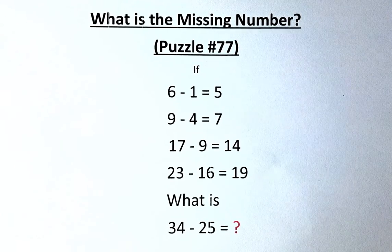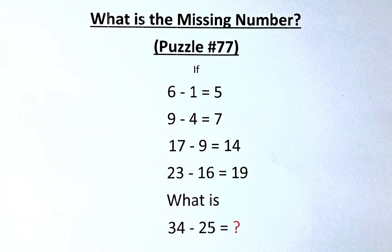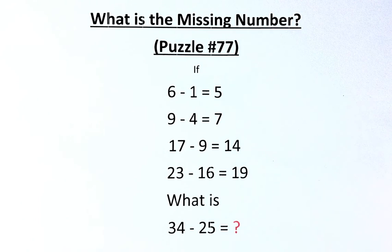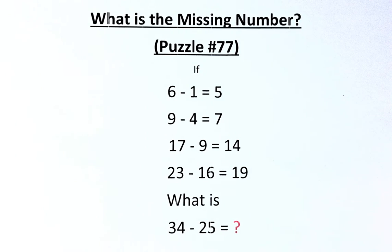Welcome back to the solution of puzzle number 77. The question is, if 6 minus 1 equals 5, 9 minus 4 equals 7, 17 minus 9 equals 14, 23 minus 16 equals 19, what then is 34 minus 25 equals?